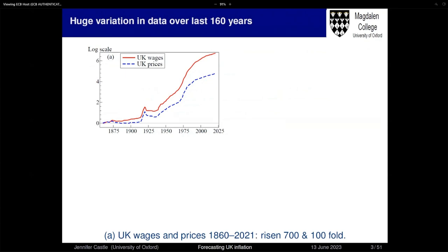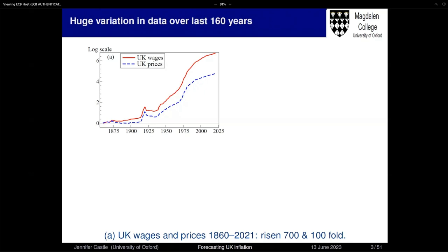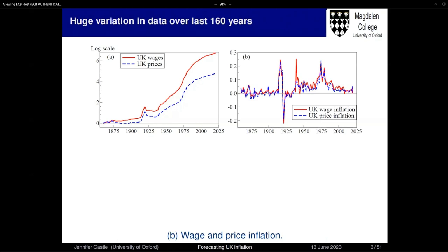Here we've got UK wages and prices over this 160-year period. UK wages have risen 700-fold, prices 100-fold, so there's a huge amount of variation in the data, which really helps with identification. Looking at wage and price inflation, we've had periods where inflation hit over 20% before — very useful when looking at inflation running upwards of 10% in the current climate. One key aspect over this long time series is how remarkably constant a cointegrating relation has been: UK real wages in the red line and UK productivity in the dashed blue line move very closely together. That provides our cointegration over the long-run time series.